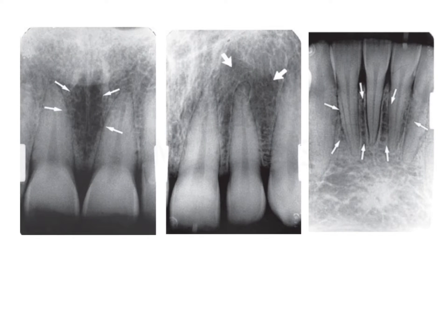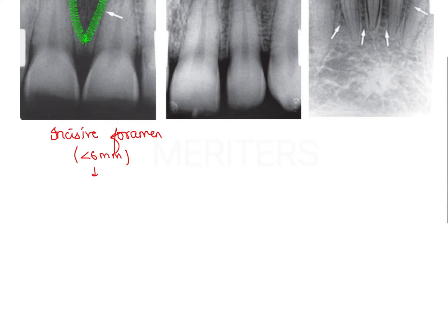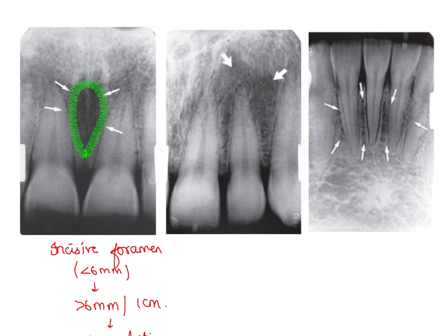The second slide showing different landmarks: we can see a diffuse radiolucency between the two central incisors, which is the incisive foramen. The size of this radiolucency is very important — the incisive foramen is normally less than 6 mm. If the radiolucency is greater than 6 mm, or some sources say larger than 1 cm, then we should consider a nasopalatine duct cyst.